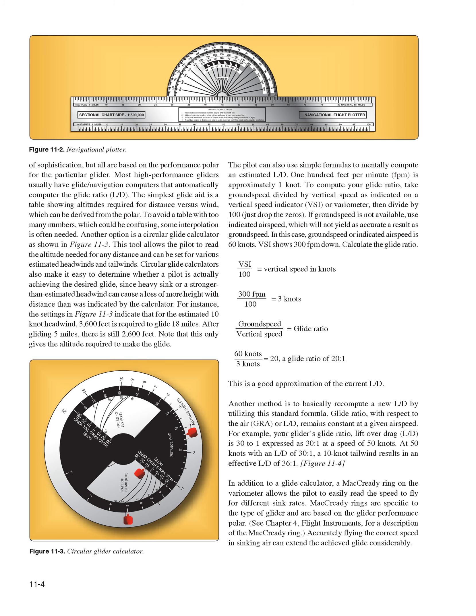Another method is to recompute a new L/D using the standard formula. Glide ratio with respect to the air (GRA or L/D) remains constant at a given airspeed. For example, if the glider's L/D is 30:1 at 50 knots, a 10-knot tailwind results in an effective L/D of 36:1. A McCready ring on the variometer allows the pilot to easily read the speed to fly for different sink rates; McCready rings are specific to the glider type and based on its performance polar.